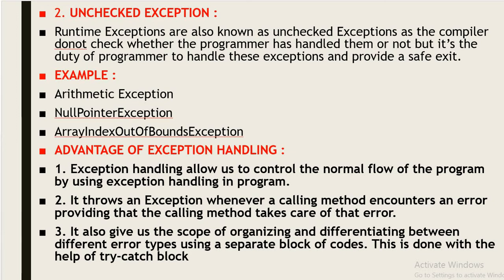The next type is unchecked exception, which occurs at runtime. Runtime exceptions are also known as unchecked exceptions, as the compiler does not check whether the programmer has handled them or not. It is the duty of the programmer to handle unchecked exceptions and provide a safe exit. Examples of unchecked exceptions are ArithmeticException, NullPointerException, ArrayIndexOutOfBoundsException, etc.